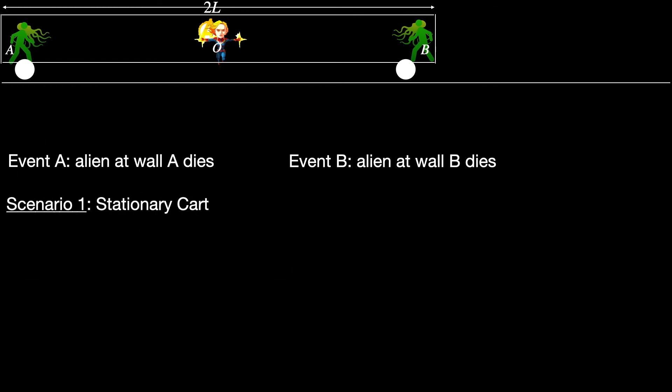This time let's make the situation more cinematic. Imagine that instead of the machine throwing tennis balls, we have Captain Marvel at the center of the cart shooting her photon blasters simultaneously at two aliens standing at the walls A and B. Events of interest here are alien A and alien B getting hit by the photon blasts and dying. We still have two sets of observers: SG on the ground and SC on board the cart. The two scenarios we consider are again the same: first a stationary cart and then a uniformly moving cart. We have the same questions as before as well: if the two aliens die simultaneously or not according to the observations made by the two sets of observers in each scenario. Let's find out.